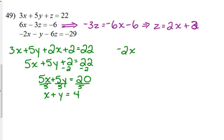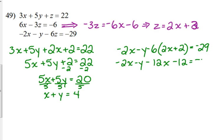So, that was plugging into the first equation. I also need to plug it into the last equation. Negative 2x minus y minus 6 times 2x plus 2 is equal to negative 29. Distribute the negative 6. We get negative 12x minus 12 equals negative 29. And, then we're going to go ahead and add the 12 to the other side. So, that gives us negative 17. Now, just like we divided the entire other equation by 5, we can divide this entire equation by negative 1 and get rid of those negatives.